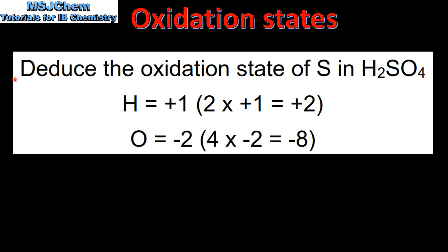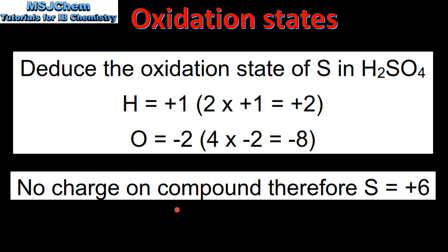Next we'll look at a couple of examples. The first: deduce the oxidation state of sulfur in H₂SO₄ (sulfuric acid). Hydrogen has an oxidation state of plus 1, and with two hydrogens that gives a charge of plus 2. Oxygen has an oxidation state of negative 2, and with four oxygens that gives an overall charge of negative 8. There's no charge on the compound, therefore the sulfur in H₂SO₄ has an oxidation state of plus 6.